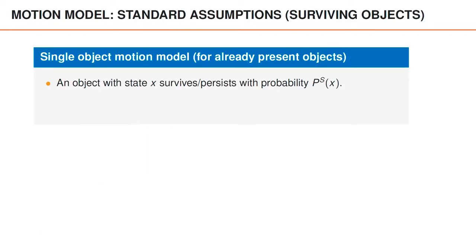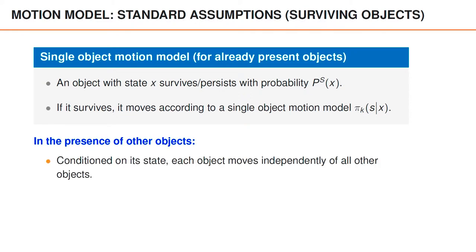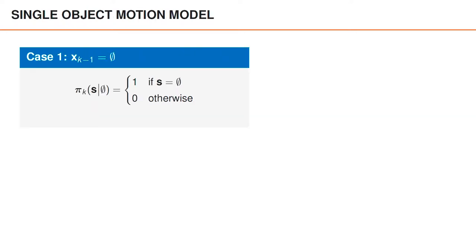The standard model assumptions for the surviving objects are as follows. An object survives, or remains in the area of interest, with some probability ps that may depend on the object's state x. If the object survives, its motion is described by a motion model pi k for the object's state. As usual, the single object's state sequence is a Markov chain. When multiple objects are present, they move independently of each other — that is, if we know the state of an object at time k-1, its state at time k is independent of the states of the other objects.